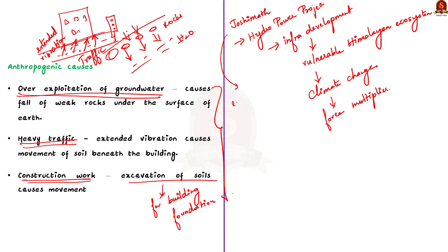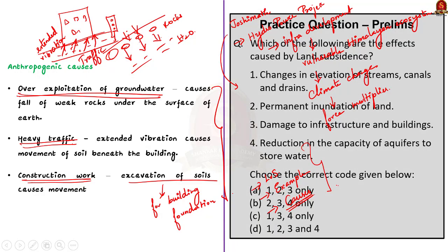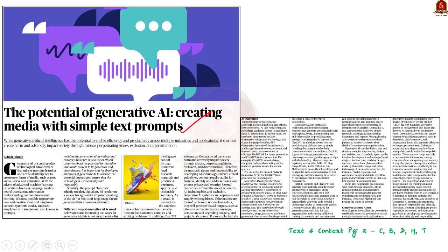That concludes the Joshimath discussion, where we saw about land subsidence, its example, and natural as well as anthropogenic causes. Now, looking at this text-in-context article, it talks about generative AI. The writer is director of product for the Bing organization at Microsoft, so this article holds significance as it comes from a domain expert. Generative AI is a cutting edge technological advancement that utilizes machine learning and artificial intelligence to create new forms of media such as text, audio, video and animation.